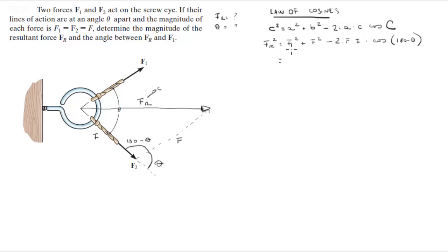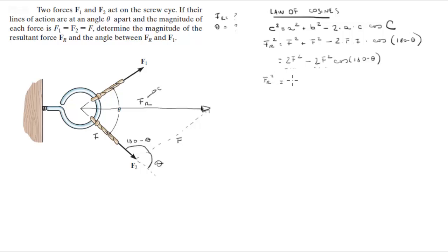We simplify by adding the two F squared terms to get 2F squared, and multiplying the last two F's to get 2F squared. So we have 2F squared minus 2F squared times cosine of (180 minus theta). Factoring out 2F squared gives us FR squared equals 2F squared times (1 minus cosine of 180 minus theta).